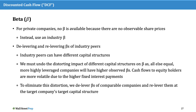Because industry peers likely have different capital structures, we need to undo the distorting impacts of their different capital structures. This is known as delevering comps. Then we'll relever them at the target company's target capital structure.